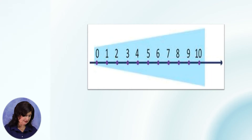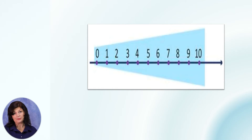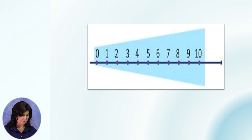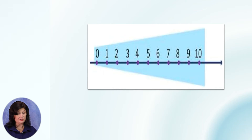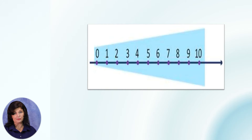А вот если надо сравнить числа 9 и 11, сравнить эти числа можно двумя способами. Первый — тот, о котором мы только что говорили. Число 9 на луче находится левее 11, и при счёте его называют раньше 11. Значит 9 меньше 11, а 11 больше 9.